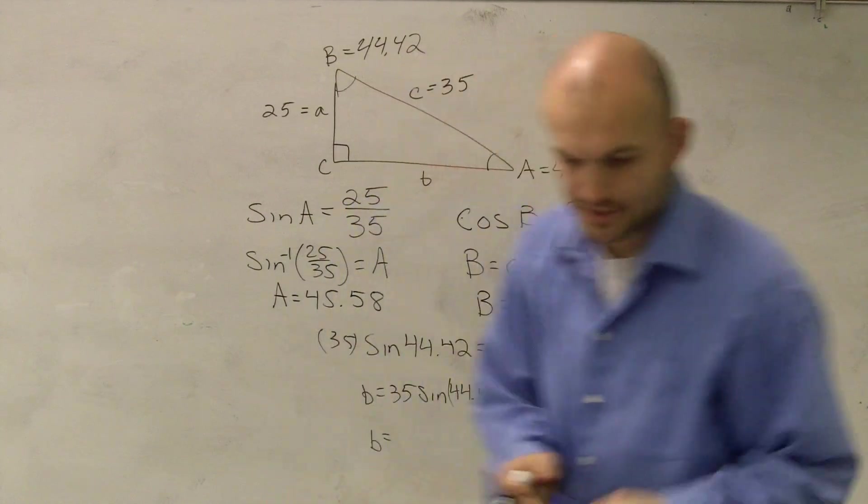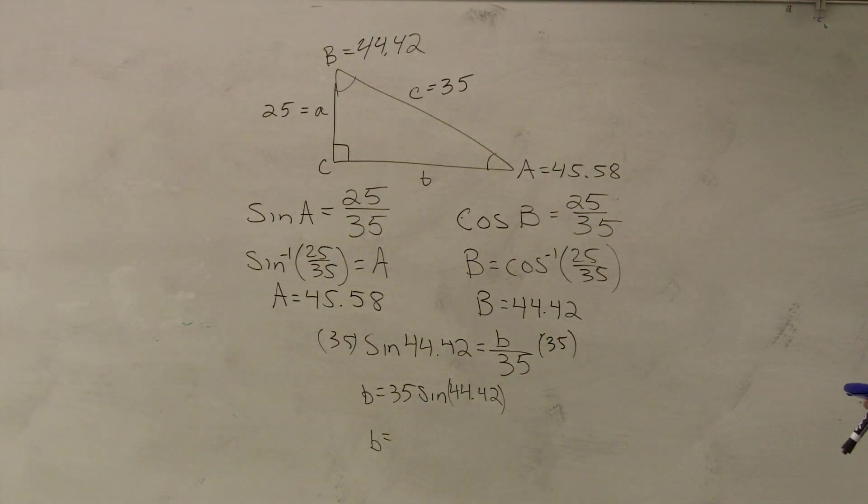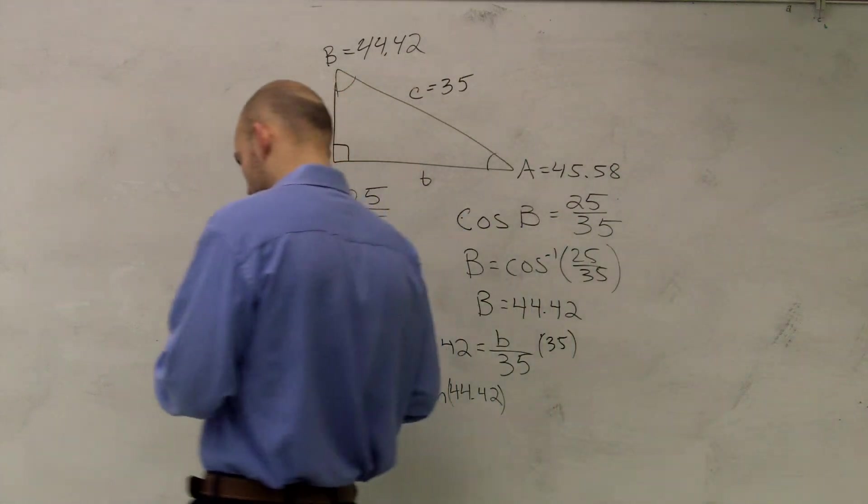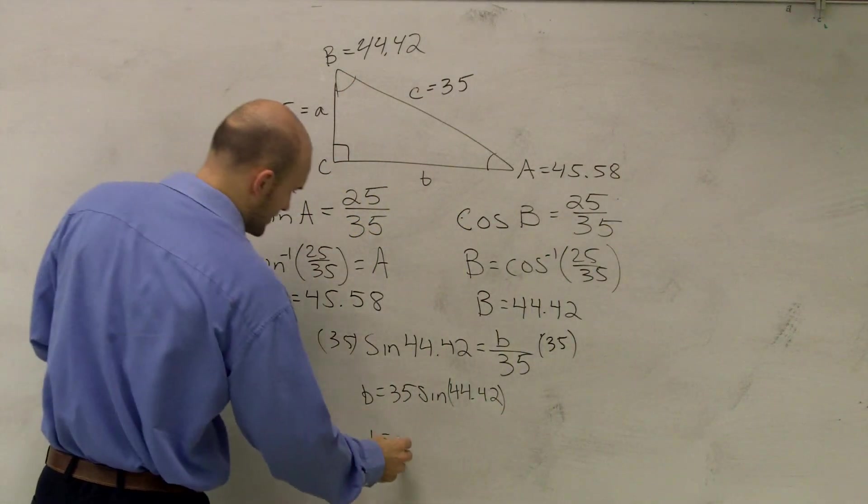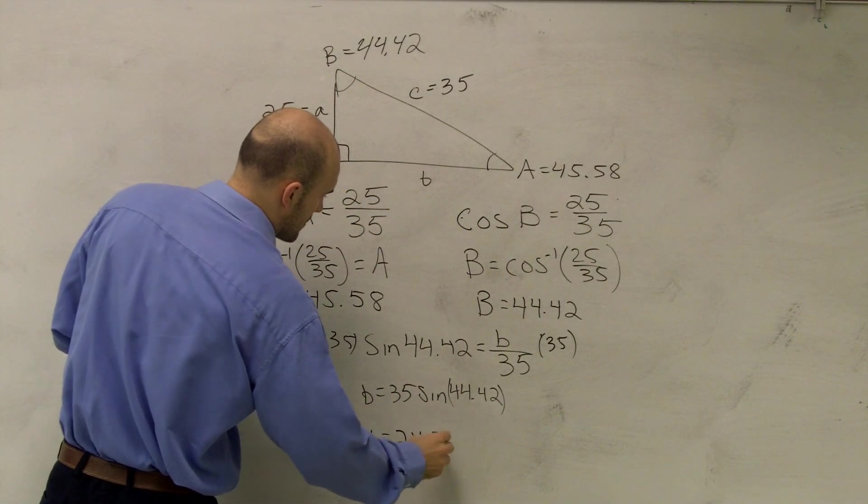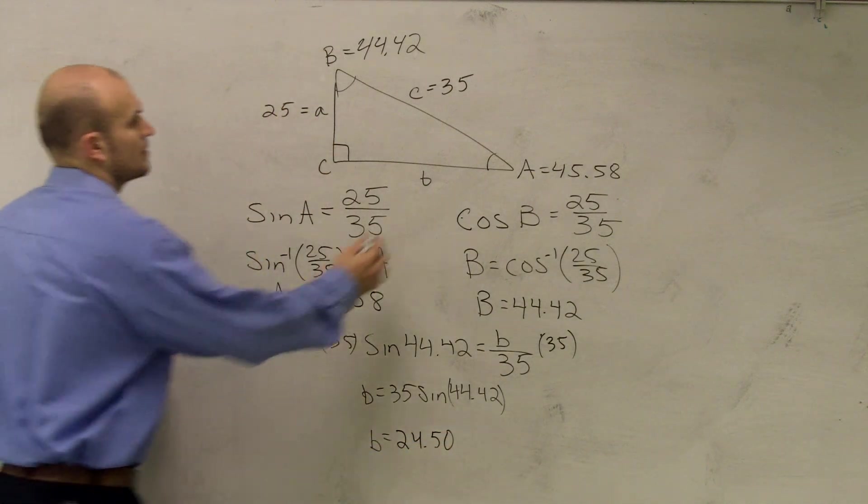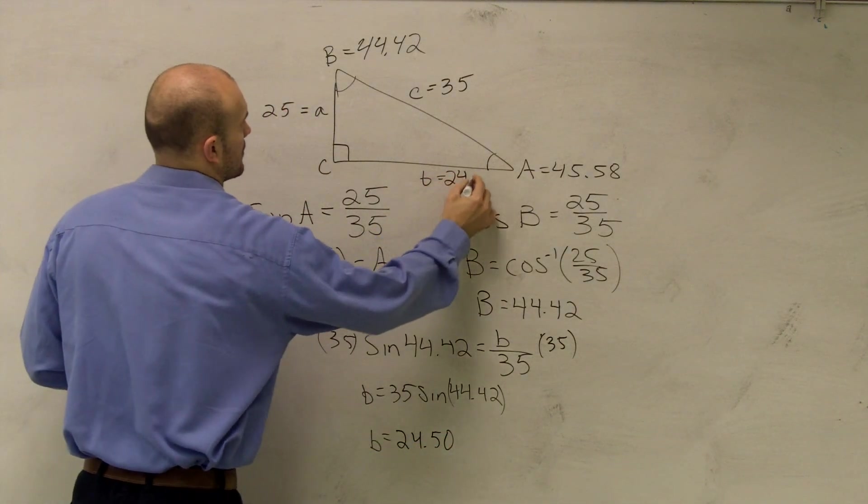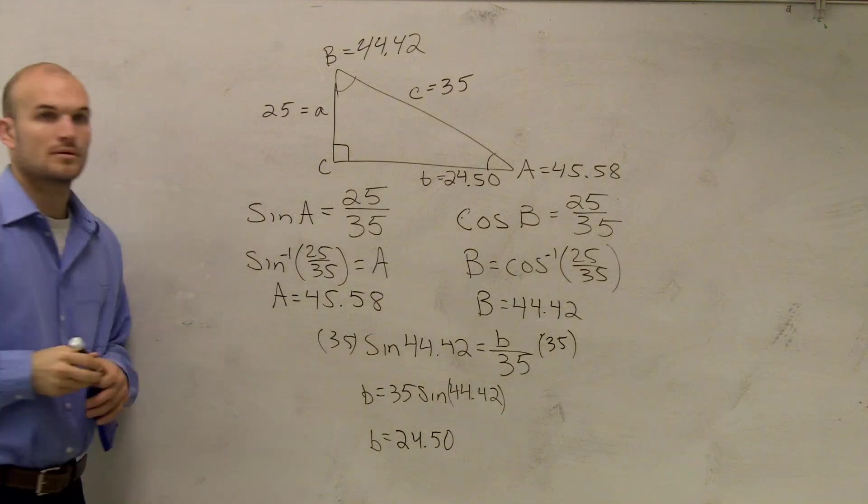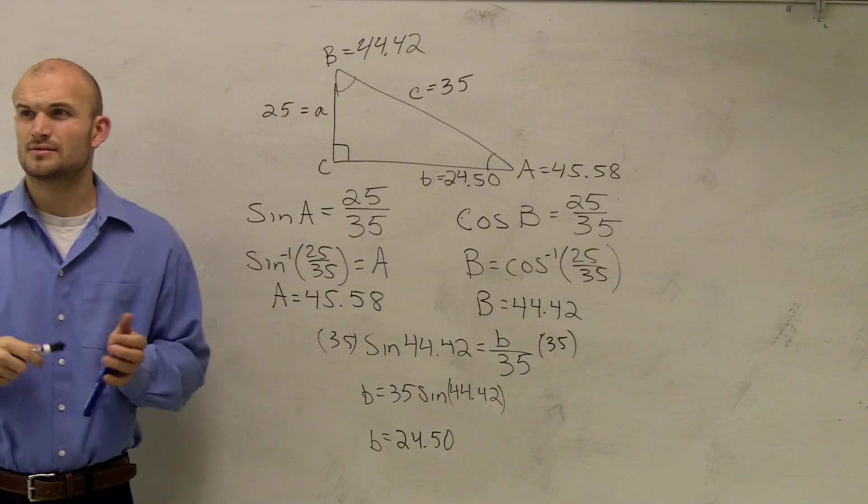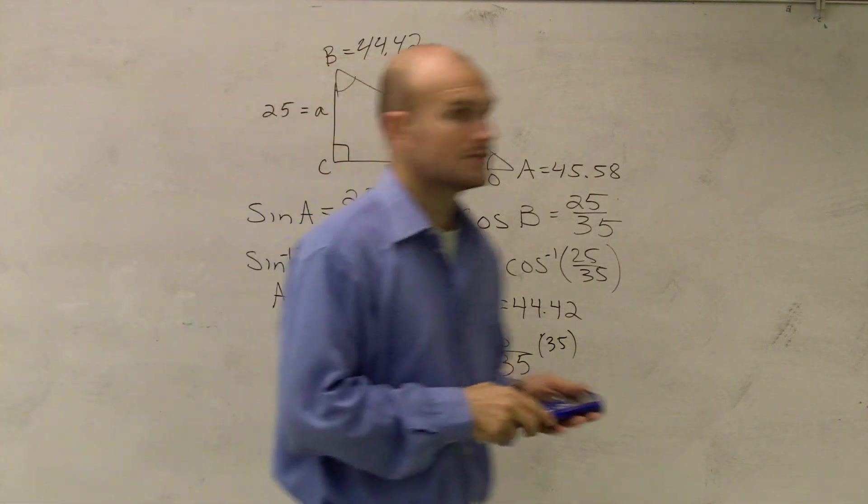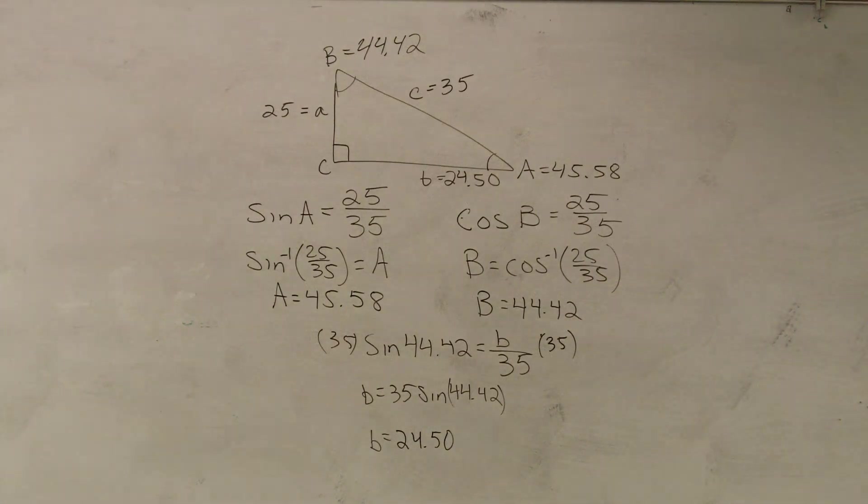So when you guys go ahead and plug that into your calculator, 35 times sine of 44.42, you get 24.50, rounding it. Cool? Makes sense? Great. You guys think you can do your own triangles? No? Yes, you can.